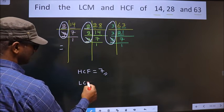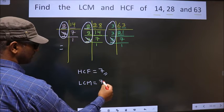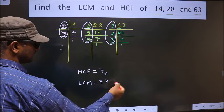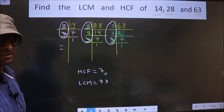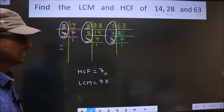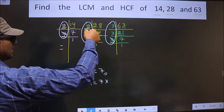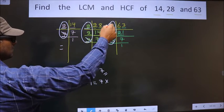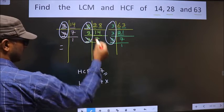Now to get LCM. Whatever HCF you got, to that we should multiply by certain numbers. By what numbers do we need to multiply? For that, see here. Here 2 is not cut. Do we have 2 here? Yes. Do we have 2 here? No. So you cut 2 here and write.